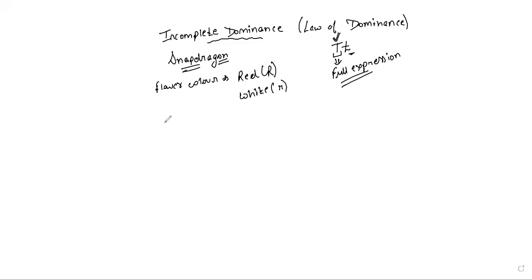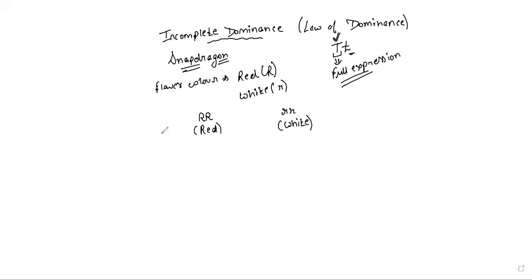Just like Mendel's crosses, we are considering two parents. Both parents are going to be pure line plants — one is pure line for the dominant character, and the second one is pure line for the recessive character. That means one plant has red flowers as a pure line dominant plant. This is the parental generation.